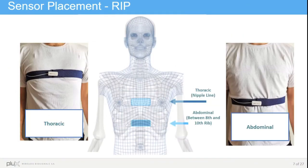Let's have a look at the sensor placement. There are basically two possible placements for the sensor. The first one is the upper placement in the thoracic region on the nipple line, as you can see in the left image. The second possible placement is in the abdominal area between the eighth and the tenth rib, as you can see in the right image.